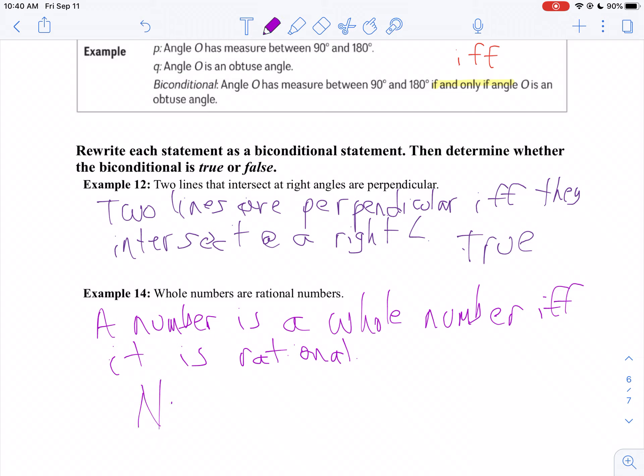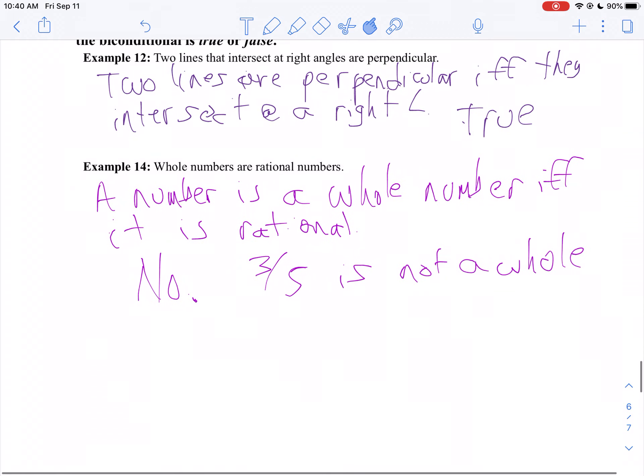Because a number could be like three-fifths. Three-fifths is a rational number, but it's not whole. Because fractions can be rational numbers. That's where we get it from, ratio of two numbers. So if you have a fraction, it's a rational number, but it doesn't have to be a whole number. But if it's a whole number, you can always write a whole number as a fraction, just put it over one.